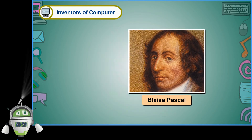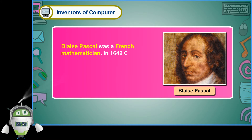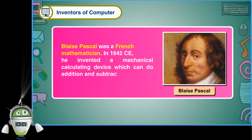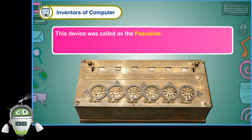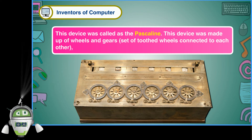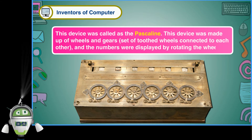Blaise Pascal was a French mathematician. In 1642 CE, he invented a mechanical calculating device which can do addition and subtraction. This device was called the Pascaline. It was made up of wheels and gears — a set of toothed wheels connected to each other — and the numbers were displayed by rotating the wheel.